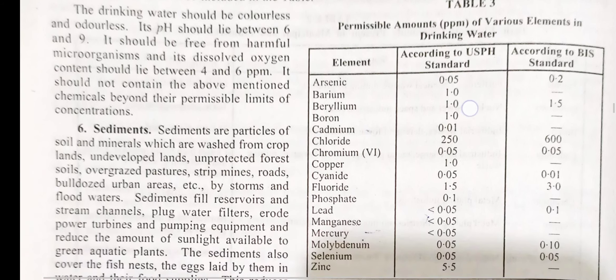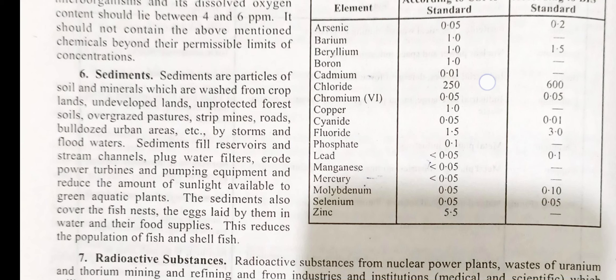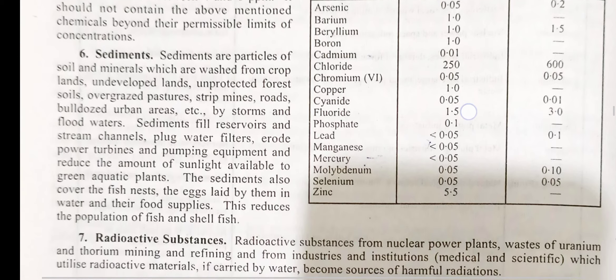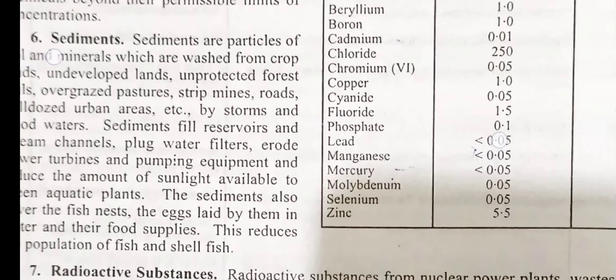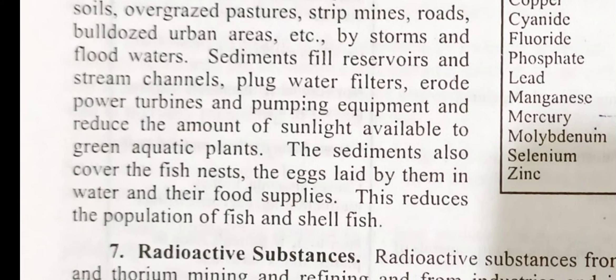Category 6: Sediments. Sediments are particles of soil and mineral which are washed from cropped lands, underdeveloped lands, unprotected forests, overgrazed pastures, strip mines, roads, bulldozed urban areas, etc., by storm and flood water. Sediments fill reservoirs and stream channels, clog water filters, erode and damage turbines and pumping equipment, and reduce the amount of sunlight available to green aquatic plants. Sediments also cover the fish nests, the eggs laid by them in the water, and their food supplies, thereby reducing the population of fish and shellfish.